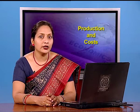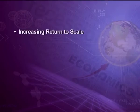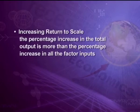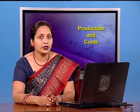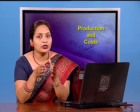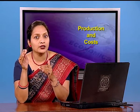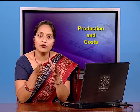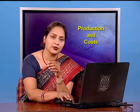This long run law is divided into three stages. The first stage is increasing returns to scale, which means that the percentage increase in total output is more than the percentage increase in all the factor inputs. For example, if labor and capital are increased by 50 percent and the total product increases by 70 percent, the law of increasing returns to scale is said to be operating.